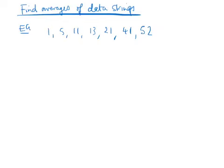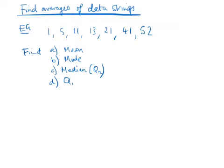We're going to be asked to find the mean, the mode, the median — which is also called Q2 — and Q1 and Q3, and the last one is the interquartile range.